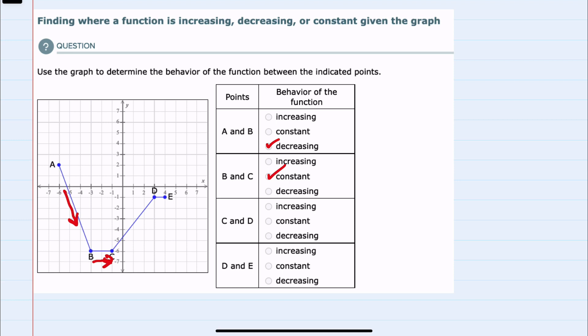Going from C to D, the height is going up from left to right, so from C to D it is increasing.